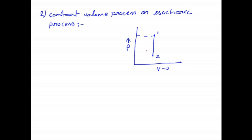So this type of process is a constant volume process. If we find the work done for the constant volume process, it will be the integral of P dV. But since volume is constant, dV will be 0. So the work done for the constant volume process is 0.